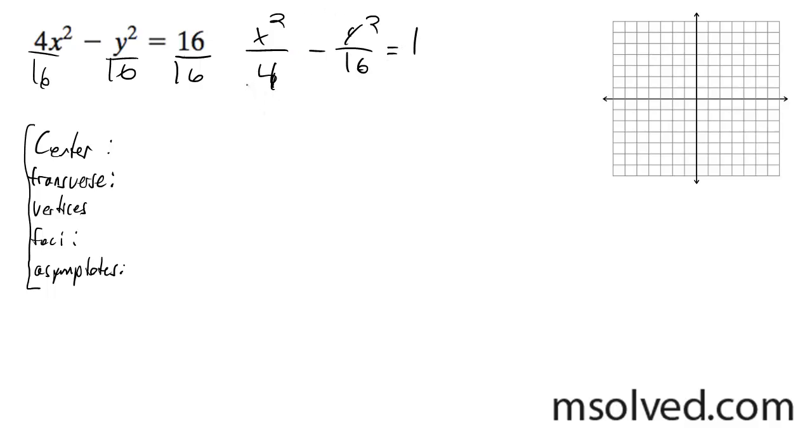What we're going to find here, since our positive value is x, this is going to be our transverse axis and our vertices. Starting off, the center is located at (0,0), the transverse axis is the x-axis, and the vertices are going to be (-2,0) and (2,0).